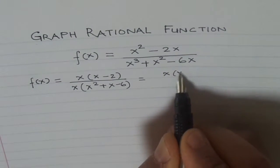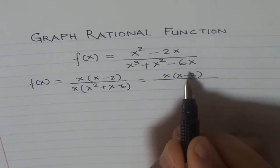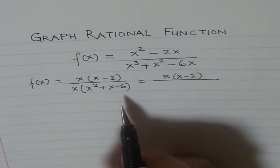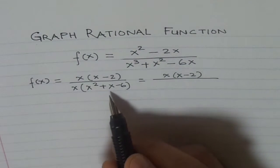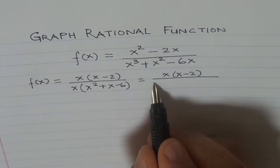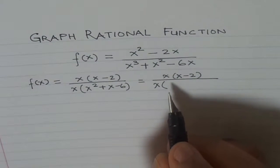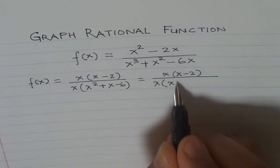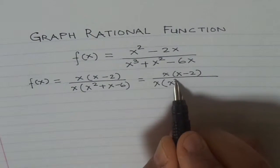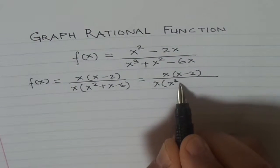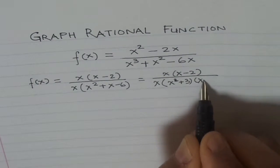So the numerator is x times (x minus 2), and for the denominator, we are looking for a product of minus 6 and a sum of plus 1. So the numbers are 3 and 2. Which one should be positive? Well, the bigger number, 3. So I can write the denominator as (x plus 3) times (x minus 2).